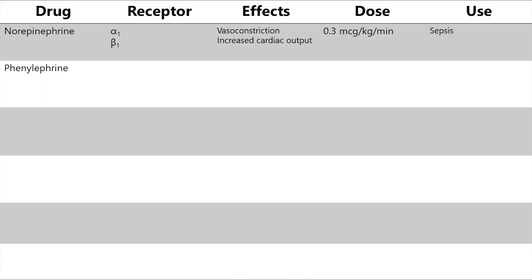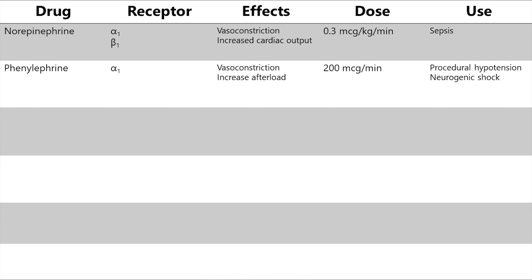Phenylephrine is a pure alpha-1 receptor vasopressor. This medication will increase your blood pressure, but it will also decrease your cardiac output by increasing afterload. It's dosed up to 200 micrograms per minute, and its primary use is as a temporary bolus vasoconstrictor during surgery or procedures, or as an infusion for treating neurogenic shock — another case of inappropriate vasodilation.